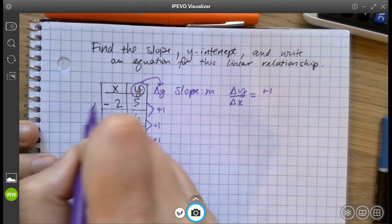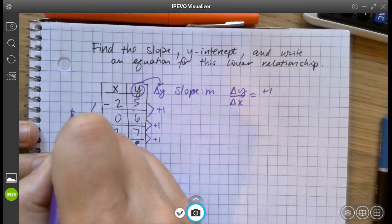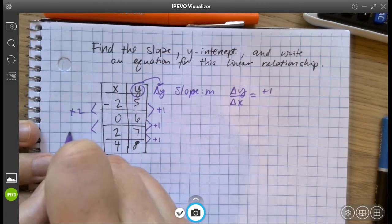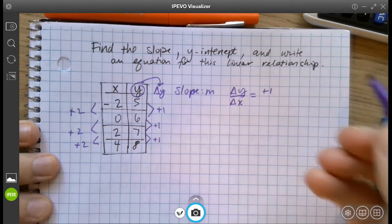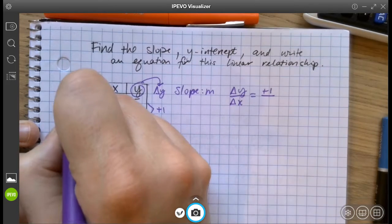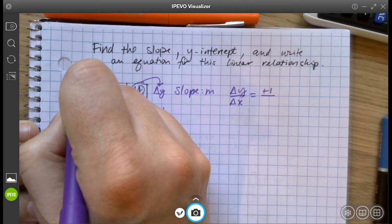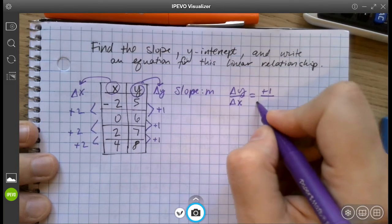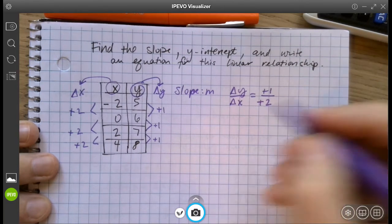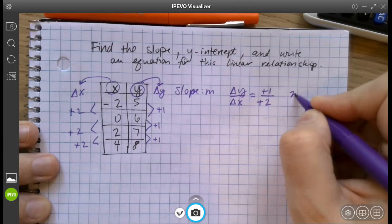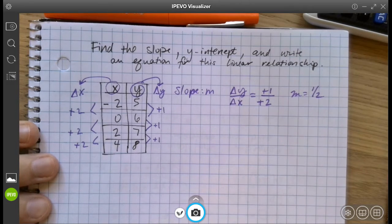And the x, from negative 2 to 0, that's going up 2, from 0 to 2 is going up 2, up 2. So the change in x, this is the change in x. If this is x, that's change in x. So that's going up 2. So the slope is 1 half.